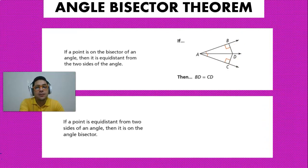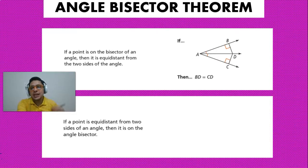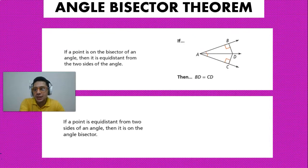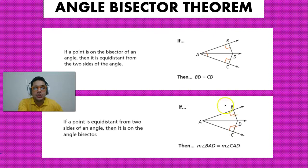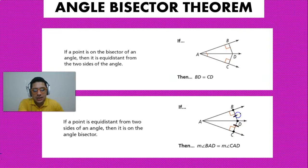We also know that there is a converse. The angle bisector theorem's converse says that if we have a point that is equidistant from the two sides of the angle, then it has to be on the angle bisector. So in this case, we're given that the distance from D to B and from D to C are the same.